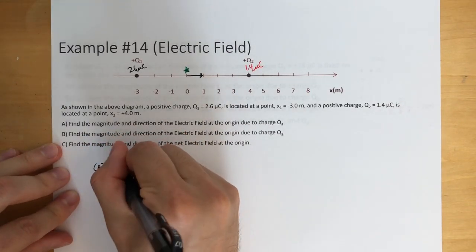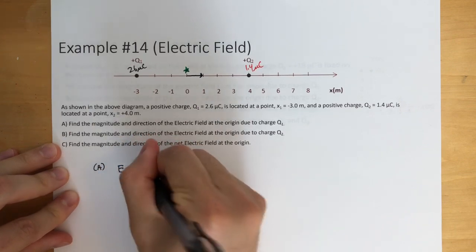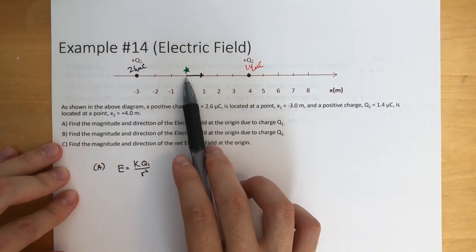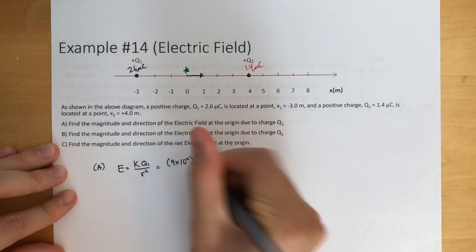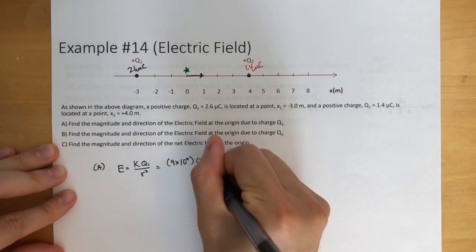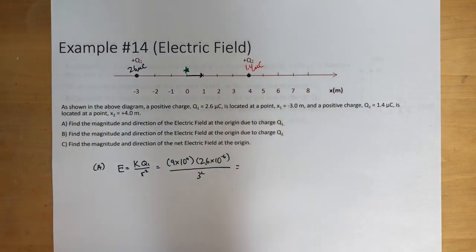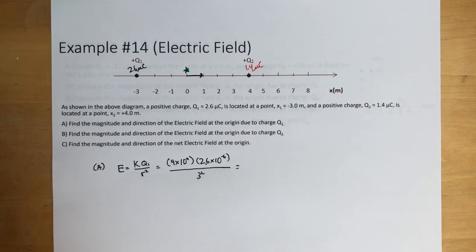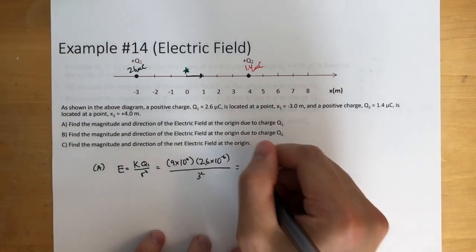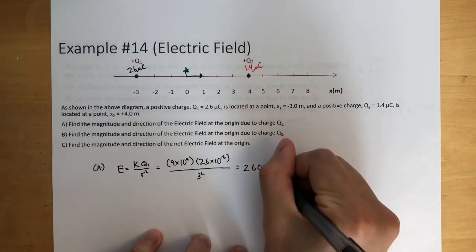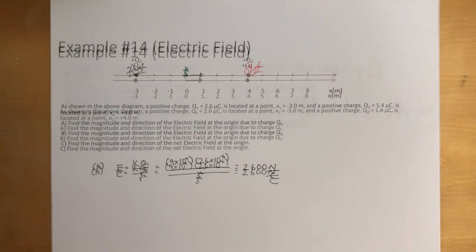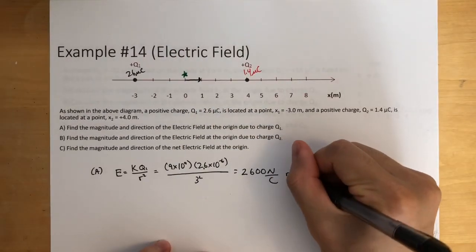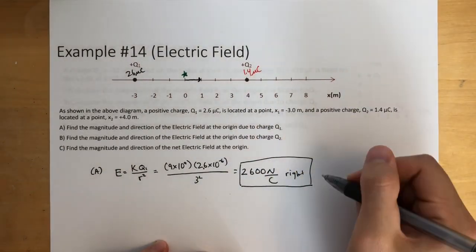So we're going to use the formula: electric field equals k times q1 over r squared. We know k is 9 times 10 to the 9th, q1 is 2.6 times 10 to the negative 6, and it is 3 meters away, so 3 squared. Putting that in our calculator, we get 2600 newtons per coulomb, and that's going to the right.